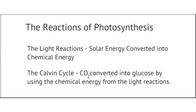There are two main divisions of photosynthesis. These are known as the light reactions, where the solar energy is collected and converted into chemical energy, and the Calvin cycle, where CO2 is converted into glucose by using the chemical energy from the light reactions. We will be looking into the light reactions in greater depth in the next video.